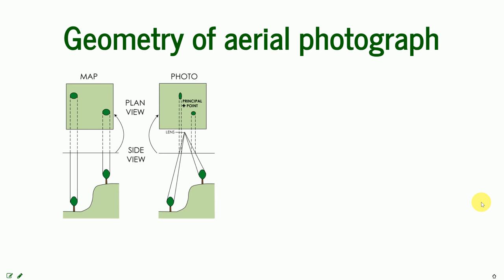First we need to understand how a photograph differs from a map. A map is a cartometric material on which you can make measurements. It has orthographic projection — everything, like this tree, has its exact location on the map. A photograph is different. A photograph works like human eyes — it sees through a lens, which is a sensor at the center of projection, and puts everything into perspective. So the same trees will be depicted in a different place on the photo and will appear distorted in shape, unlike the map where you see everything from the top.